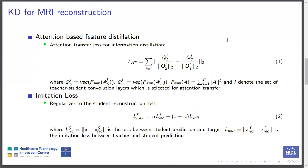We propose the following for MRI reconstruction. Attention-based feature distillation. Intermediate feature maps of teacher are learned by student. Imitation loss. Loss between teacher and student acts as regularizer for student reconstruction loss.